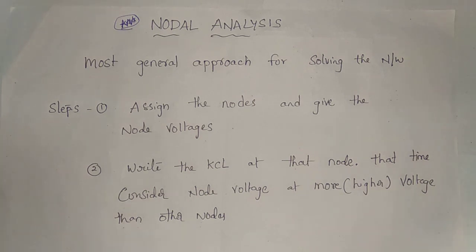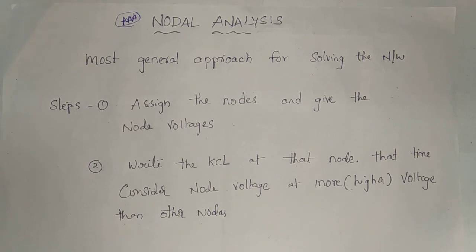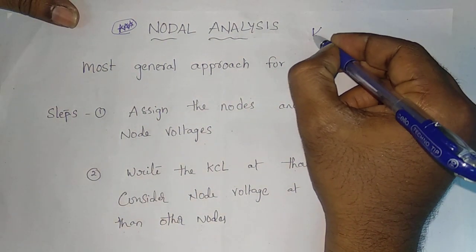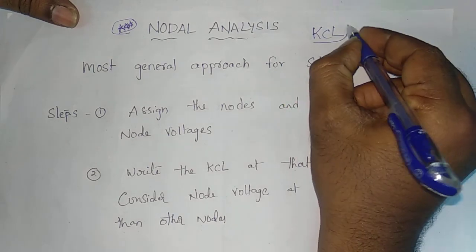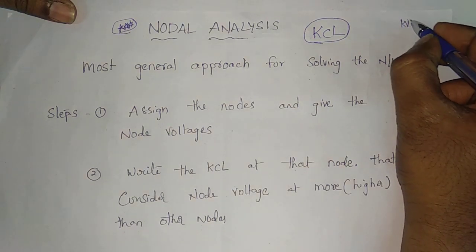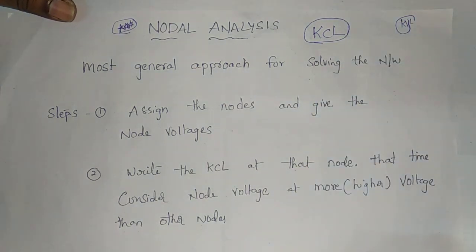Mesh analysis uses KVL. If you want to solve a closed loop path, the sum of voltages equals zero — that is mesh or loop analysis. For nodal analysis, it is KCL. For the junction, the incoming current is equal to the outgoing current — that is KCL.